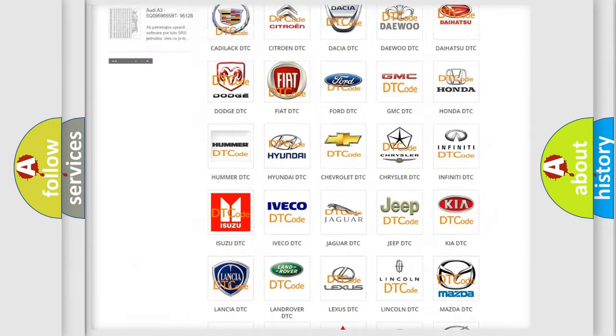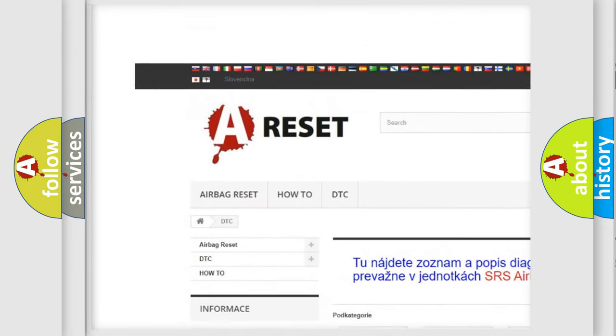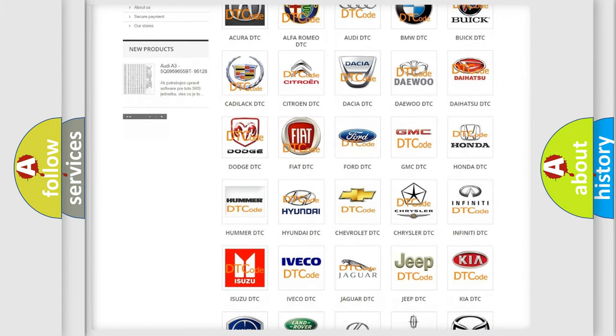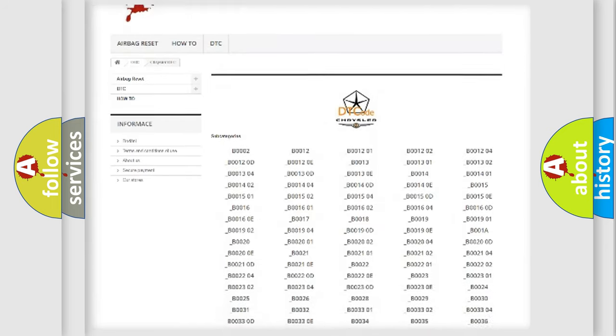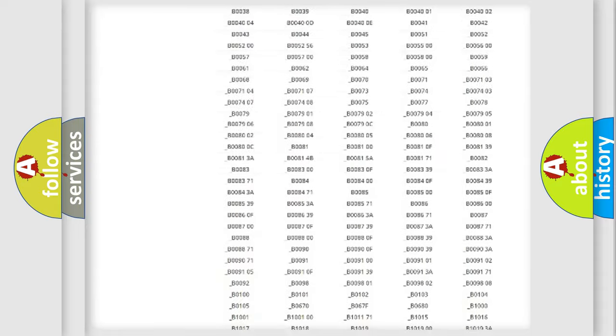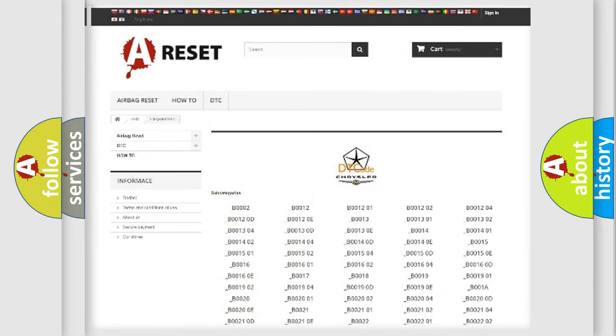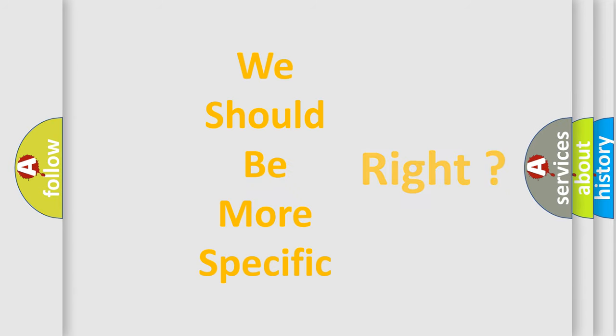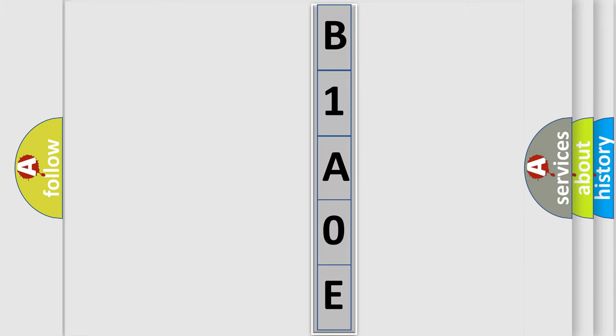Our website airbagreset.sk produces useful videos for you. You do not have to go through the OBD2 protocol anymore to know how to troubleshoot any car breakdown. You will find all the diagnostic codes that can be diagnosed in Chrysler vehicles, and many other useful things. The following demonstration will help you look into the world of software for car control units.